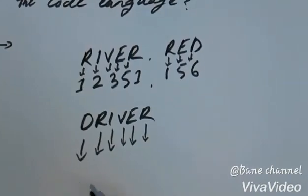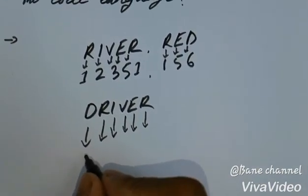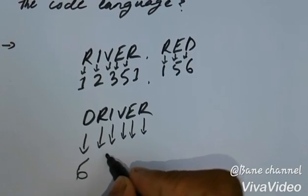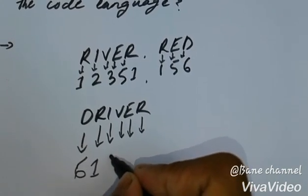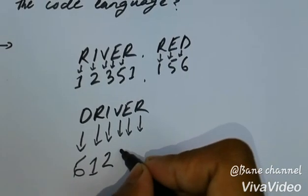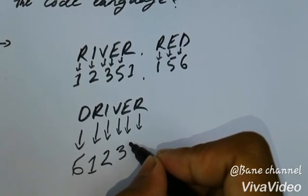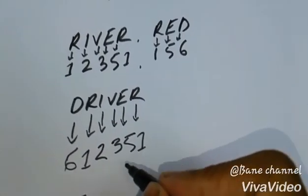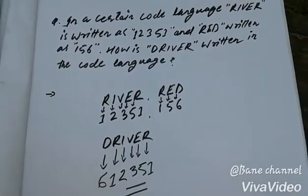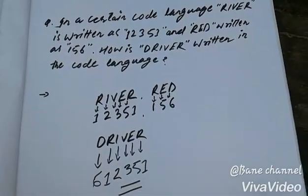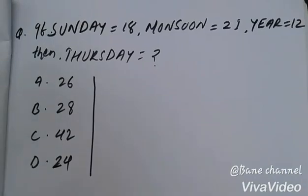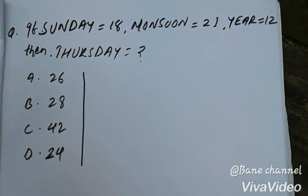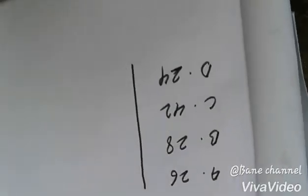RED is 1, 5, 6. So R is 1, E is in RED 1, 5, 6. So R equals 1, I equals 2, V equals 3, E equals 3, R equals 5. So I have 6, 3, 5, 1. DRIVER in code language is 6, 3, 5, 3, 5, 1.